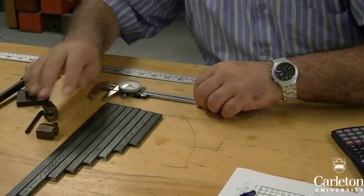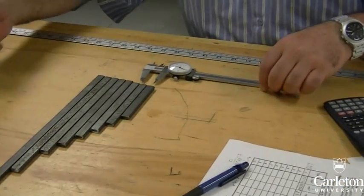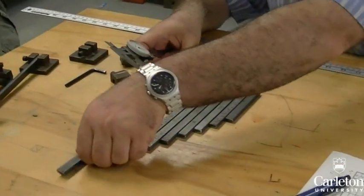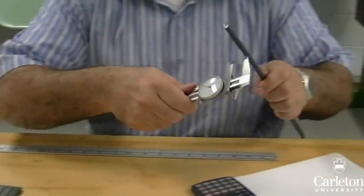For this experiment, we will be testing 10 column specimens. The first 7, as you can see, have a range of different lengths. These will all be tested with pin supports on both ends.